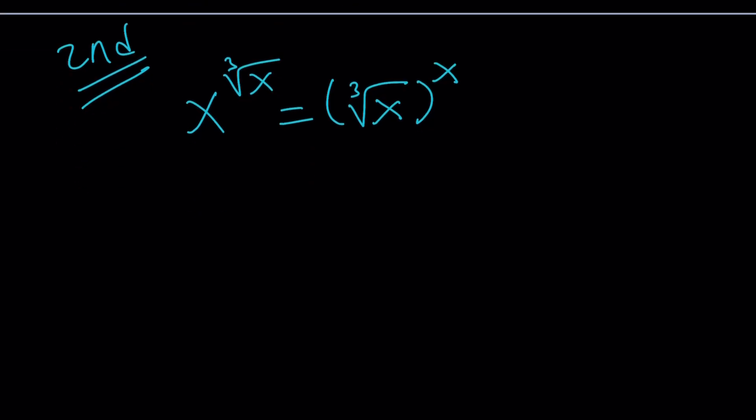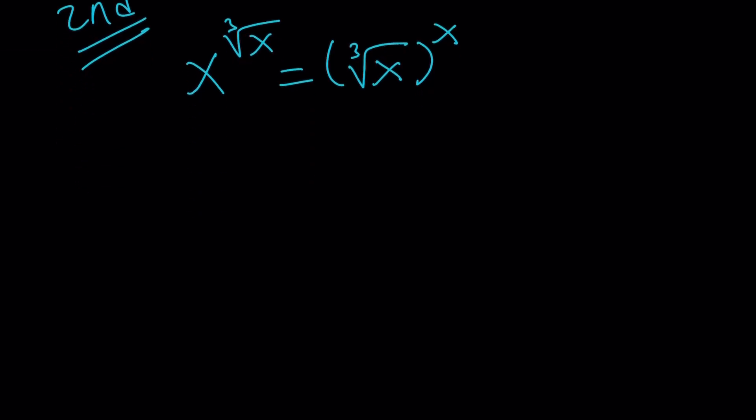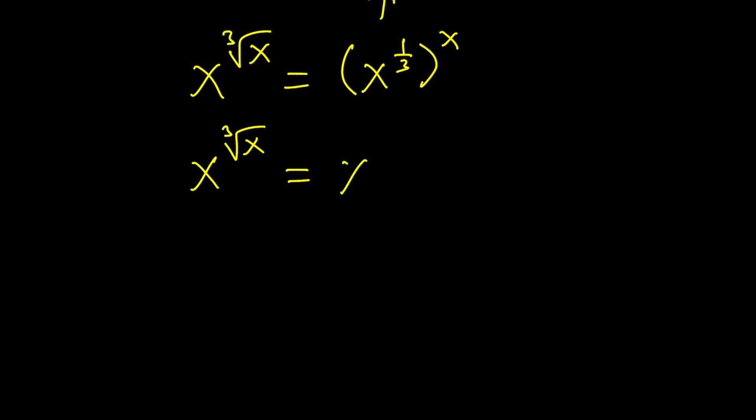And x to the power cube root of x can be written as, actually, cube root of x can be written as x to the power one-third. So x to the power cube root of x equals x to the power one-third and then that to the power x. And this gives us something very easy to handle because now this becomes x to the power one over three x, or you can just write it as x over three. At this point, we need to think about a couple different things. Like, can x be zero? Can x be one? So on and so forth.